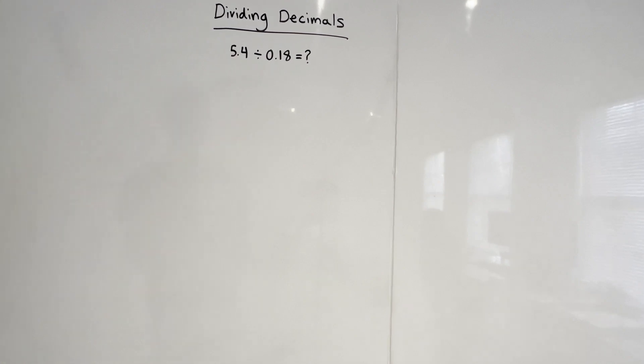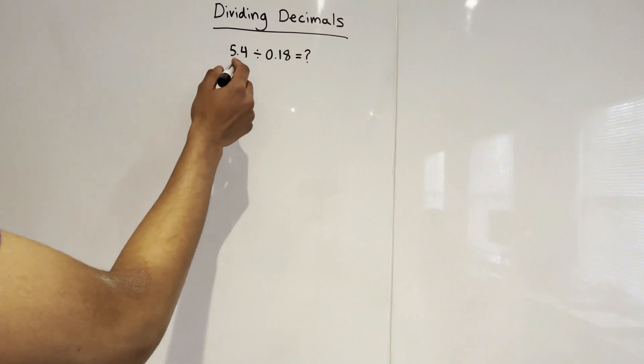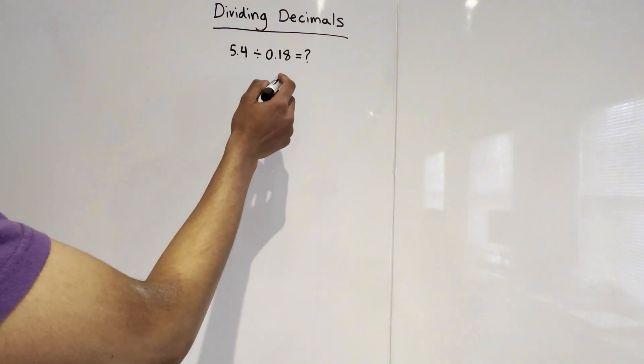All right. In today's video, we're going to be dividing decimals. And our first problem is 5.4 divided by 0.18.